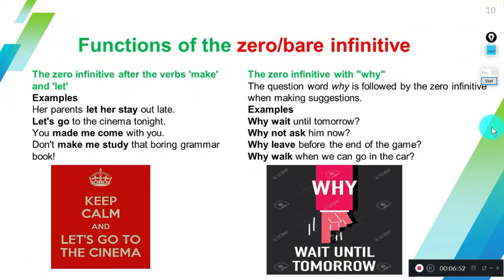We also use the zero or bare infinitive after the verbs 'make' and 'let'. For example: Her parents let her stay out late. You made me come with you. Don't make me study that boring grammar book. We use the zero infinitive after these verbs, and it also follows the rule that they're located next to an object pronoun.